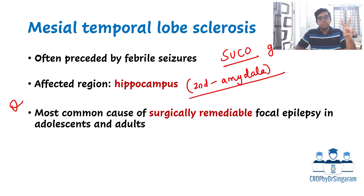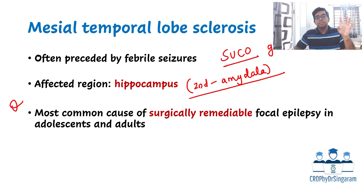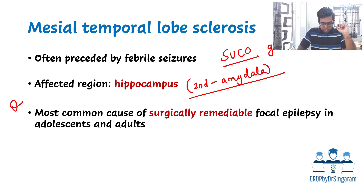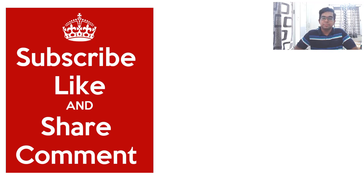Two important MCQ points from this lecture: number one, the most common epilepsy with focal seizure is benign childhood epilepsy with centrotemporal spikes (BECTS); and number two, the most common surgically treatable epilepsy with focal seizure is mesial temporal lobe sclerosis. Please share this with your friends and subscribe to the channel to get notified about upcoming videos. Thank you.